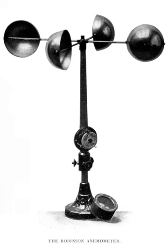In the tube anemometer, the dynamic pressure is actually being measured, although the scale is usually graduated as a velocity scale. If the actual air density differs from the calibration value due to differing temperature, elevation, or barometric pressure, a correction is required to obtain the actual wind speed. Approximately 1.5% should be added to the velocity recorded by a tube anemometer for each 1,000 feet above sea level.